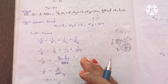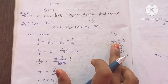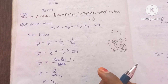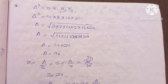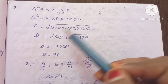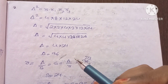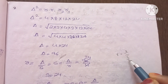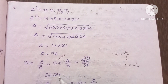Next, we use r = Δ/s and R1 = Δ/(s-A), R2 = Δ/(s-B), R3 = Δ/(s-C). We find Δ = √(R1 · R2 · R3 · r) = √(8 × 12 × 24 × 4) = √9216 = 96. Then s = Δ/r = 96/4 = 24.